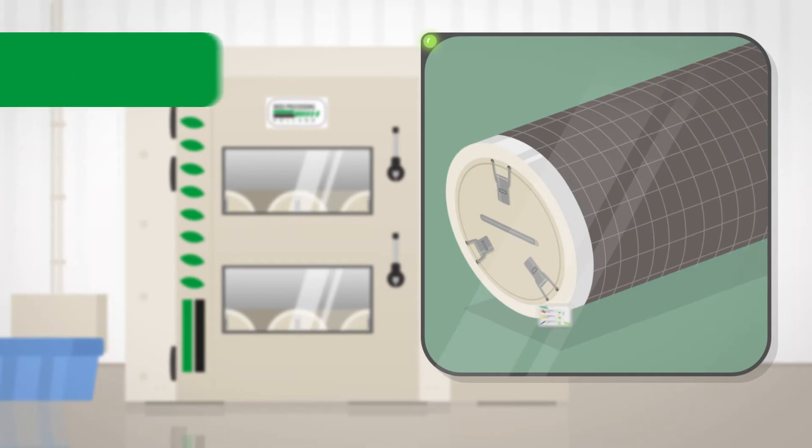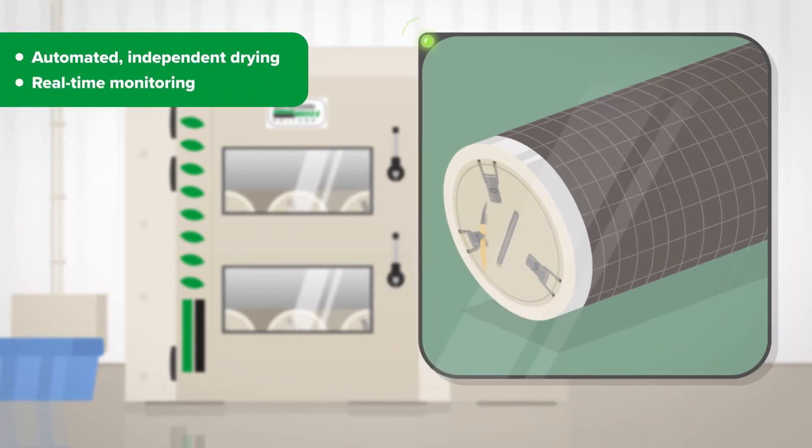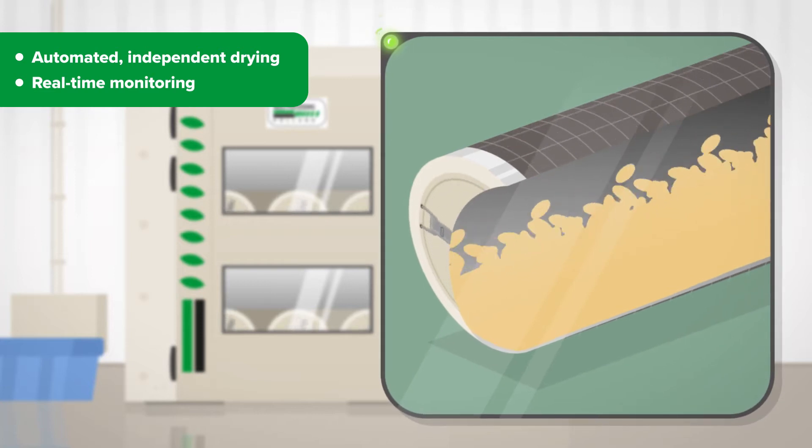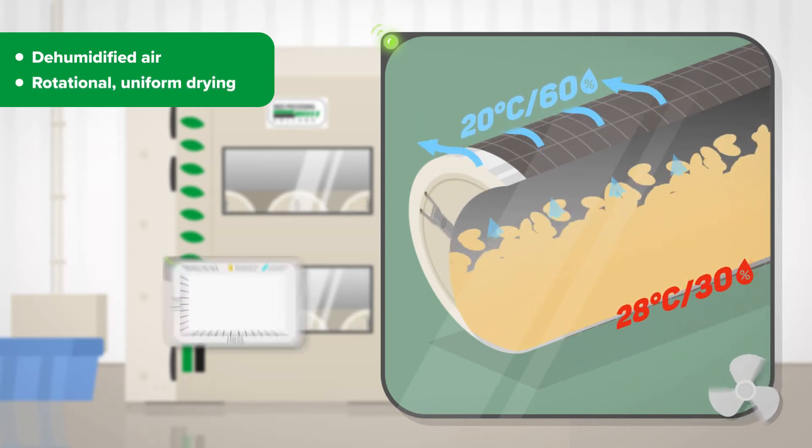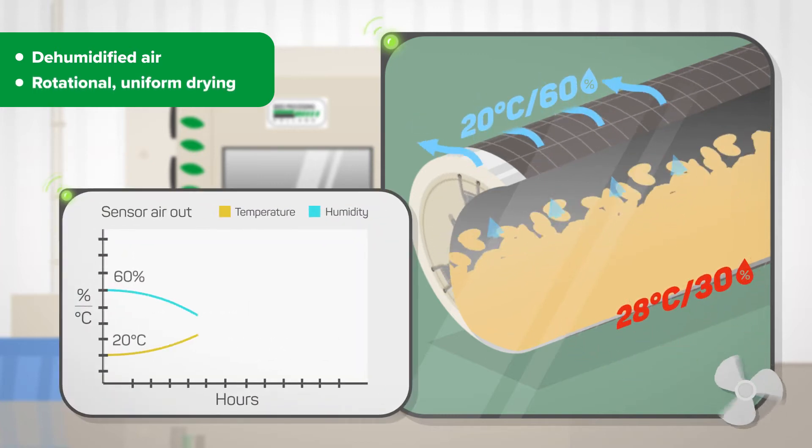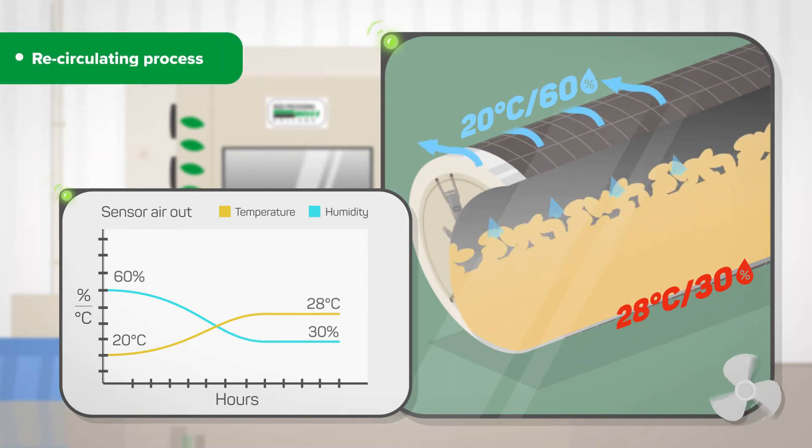The DRM seed dryer has automated drying protocols independent of any ambient climate condition and real-time monitoring. Dehumidified air is blown through the seeds which are rotated in drums during the process to obtain a uniform drying process.